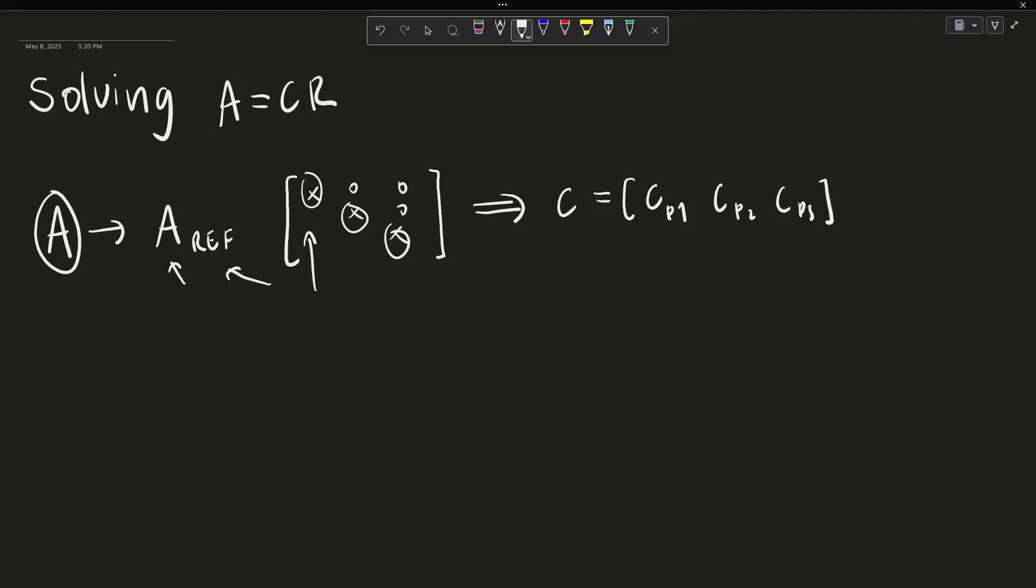And then to find R, we find all of the non-zero rows in row echelon form. Now, unlike finding C, R is directly related to the row echelon or reduced row echelon form.